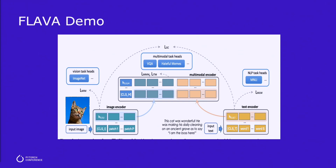Next, we go over how you could use a pre-trained model from our library for your task. Here we are using Flava, which is a vision-language foundation model. It was pre-trained by multitasking on both unimodal and multimodal data with various supervised and unsupervised objectives like image-text matching, contrastive learning, and masked language modeling. Here we have a demo video.